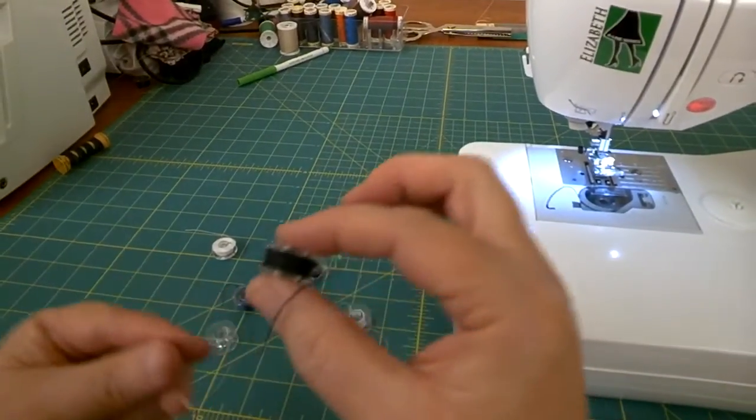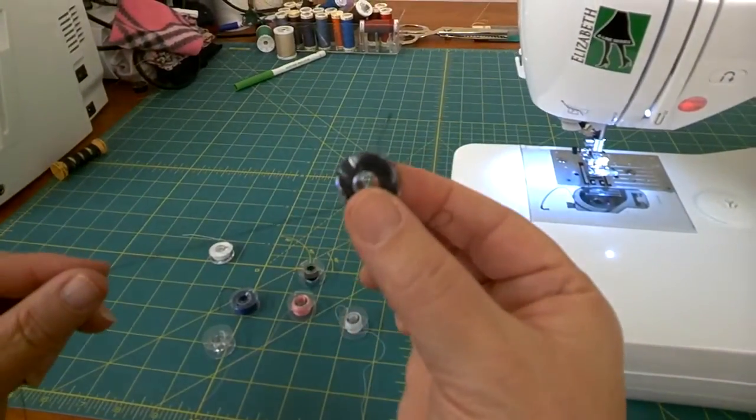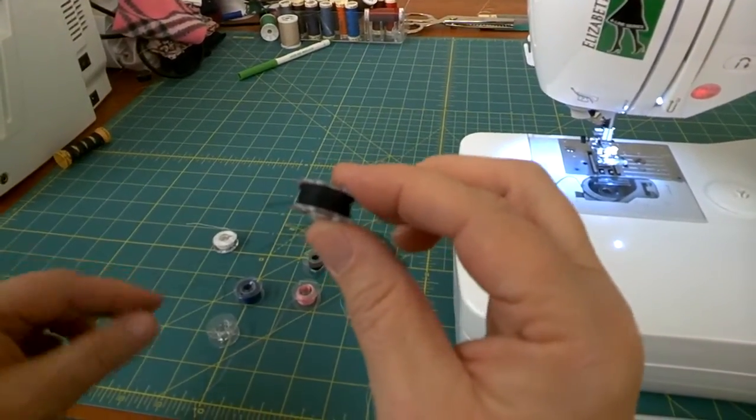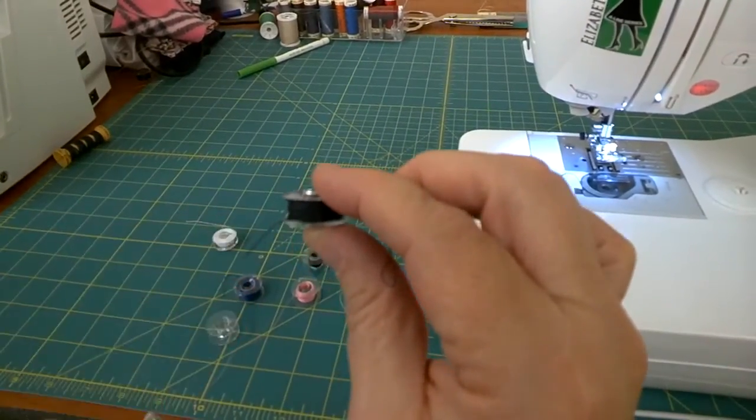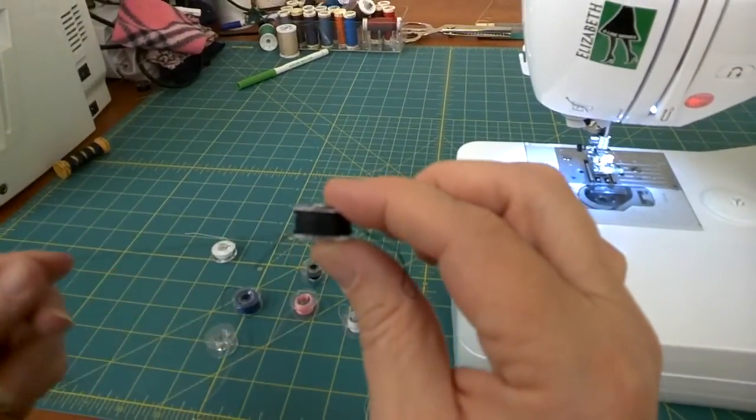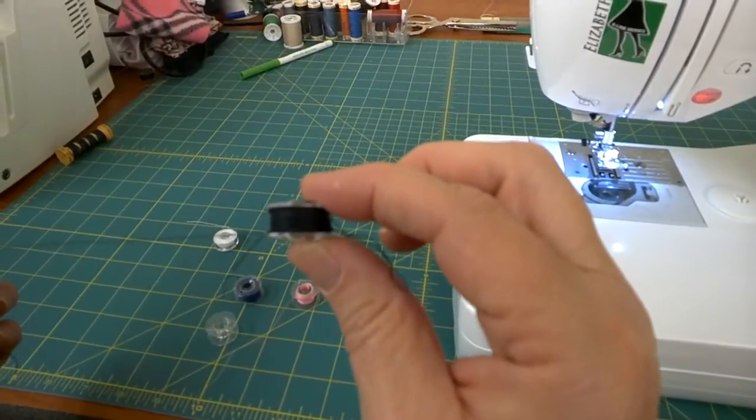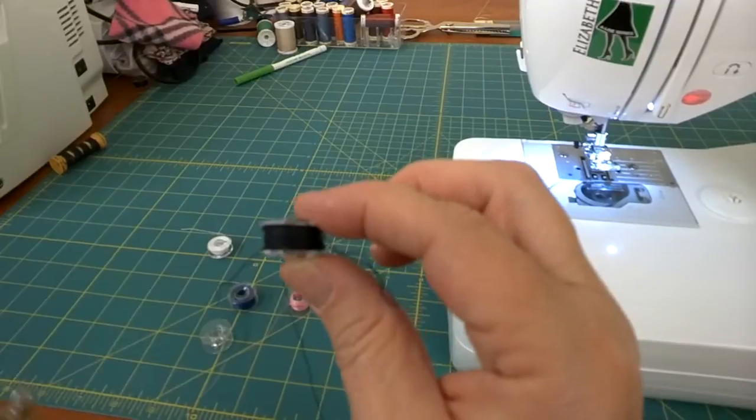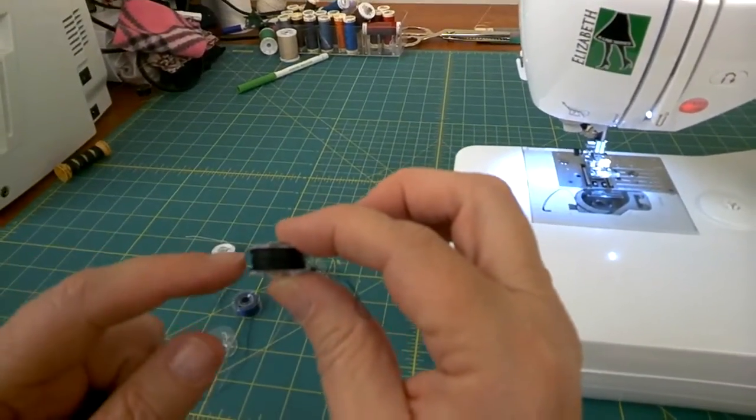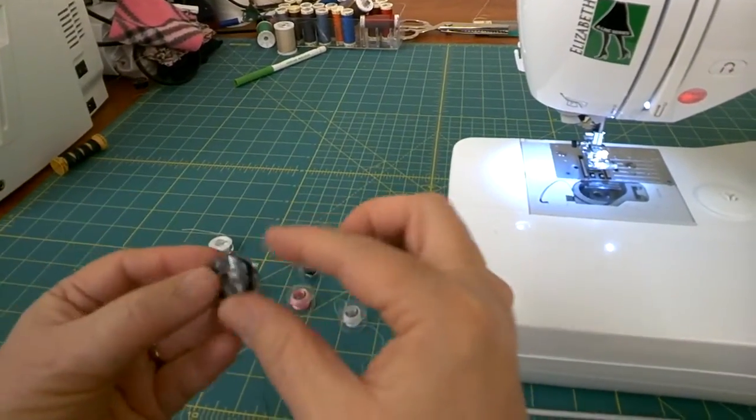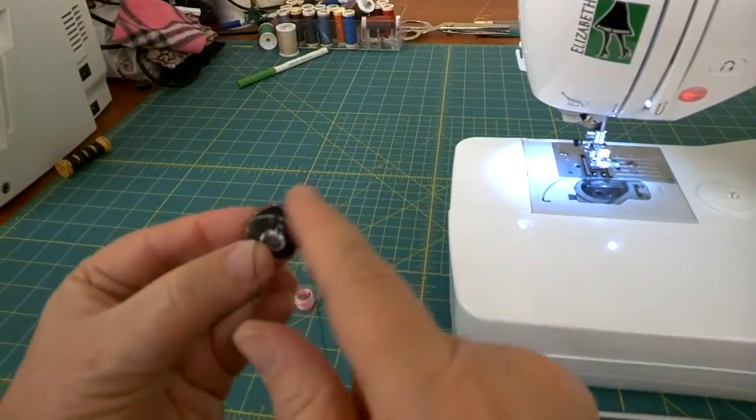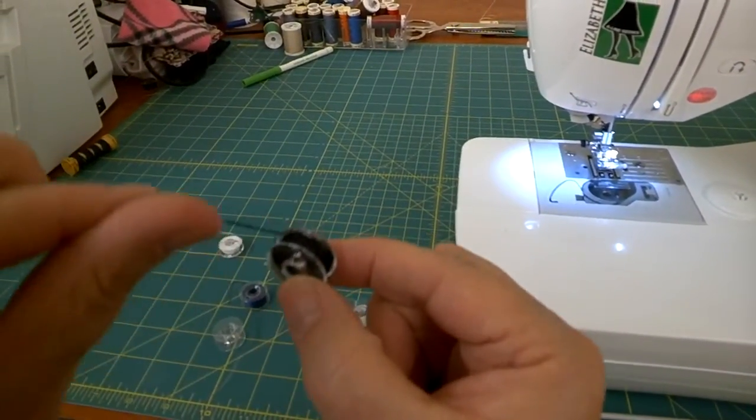Here's another one that is incorrectly wound. You can see all the threads hanging out. You can see it's not even and smooth. You do not want to use a bobbin like this because it will break, it will cause you frustration. You want just a nice evenly wound bobbin that's wound evenly up and down without all of this tangled mess hanging out.